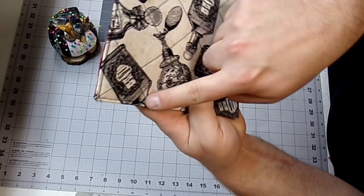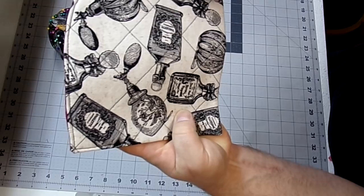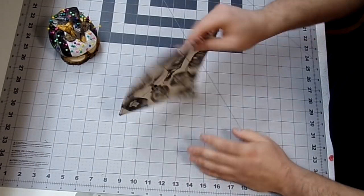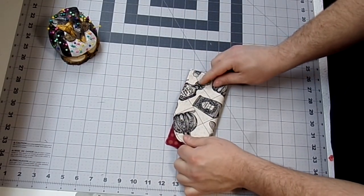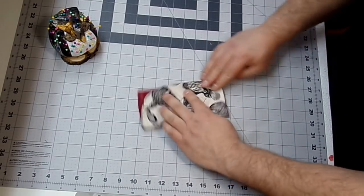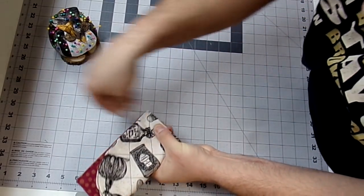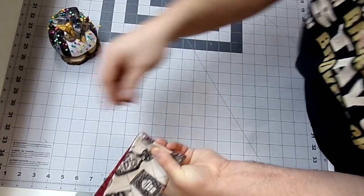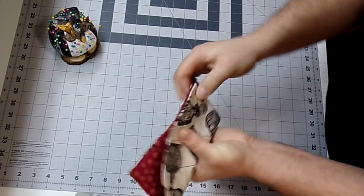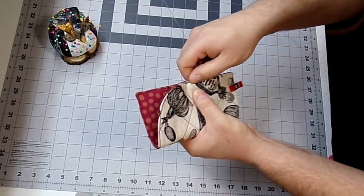All right guys, so I don't know how well you can see this, but there's my topstitching. Now I'm just going to fold this in half. You want to line it up as best as you can. And I'm just going to throw some wonder clips in there just to hold it in place. You could also just use pins, but this is kind of thick.